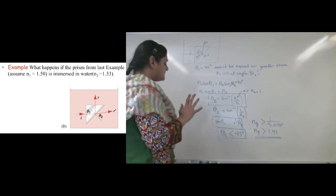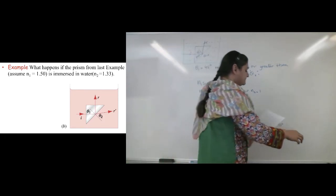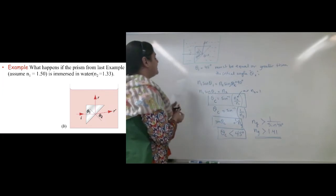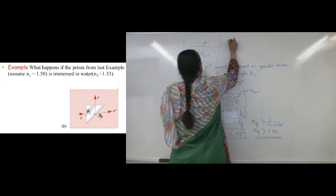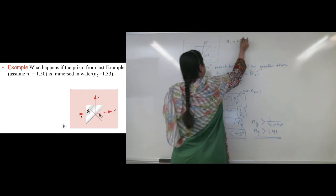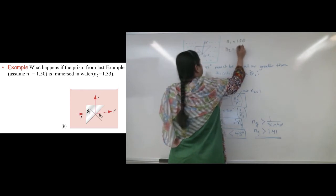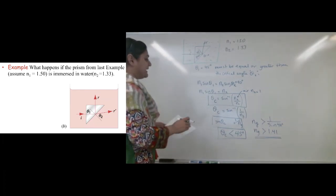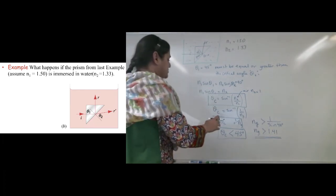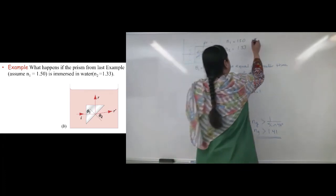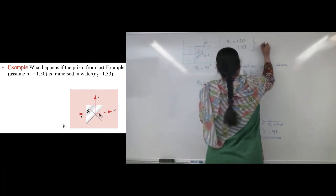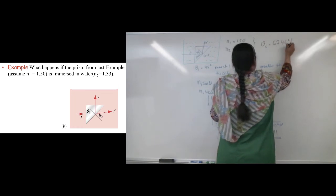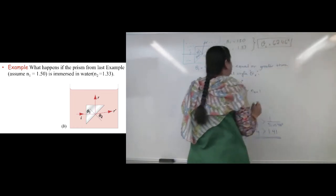So, now what will happen? Well, a lot of things will remain the same except I'm going to now have N1 equals 1.50 and N2 will equal 1.33. So, the new critical angle after doing all of these calculations just like this one, my new critical angle will become equal to 62.46 degrees.